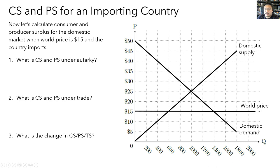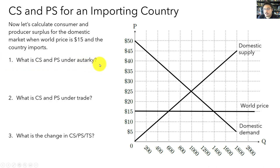We started the lecture by asking who wins and who loses from international trade. To answer this question, we need to know how to calculate consumer and producer surplus when a country opens up to trade. We'll do that using our example from when the world price is $15. We'll follow a three-step process: first, find consumer and producer surplus under autarky; second, find consumer and producer surplus when the country opens up to trade; and finally, find the change in consumer and producer surplus to identify the winners and losers.